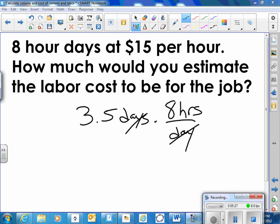So we'll just do some longhand multiplication. Eight times 3.5. Eight times 5 is 40. Eight times 3 is 24 plus 4 is 28. One decimal place. So 28 hours total to do the job.